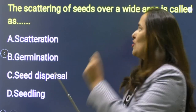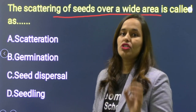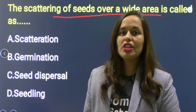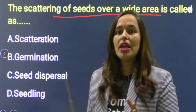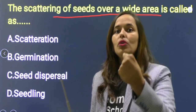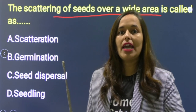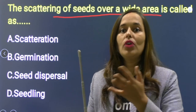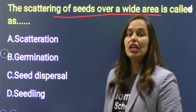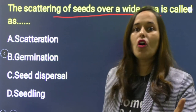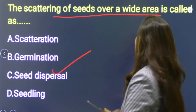Next question: The scattering of seeds over a wide area is called? यह question germination and seed dispersal chapter से है। जब birds food लेके जाती हैं, seeds गिर जाते हैं और wide area तक पहुँचते हैं। Options: scattering, germination, seed dispersal, seedling. The scattering of seed is known as seed dispersal. Option C is correct.